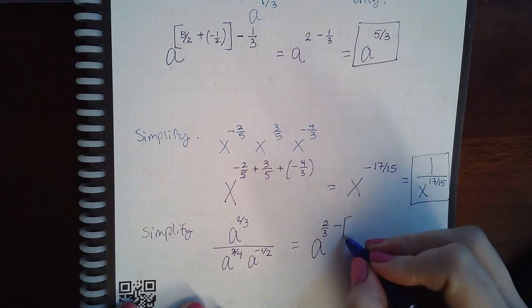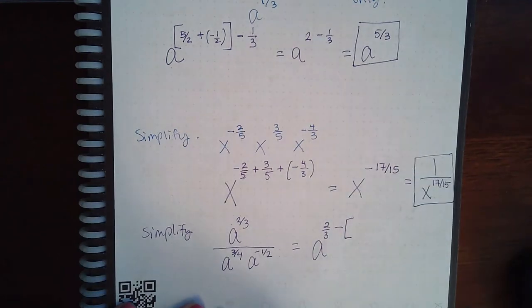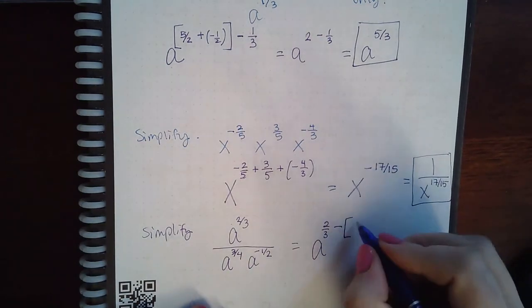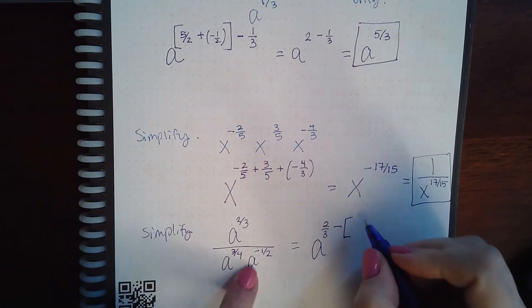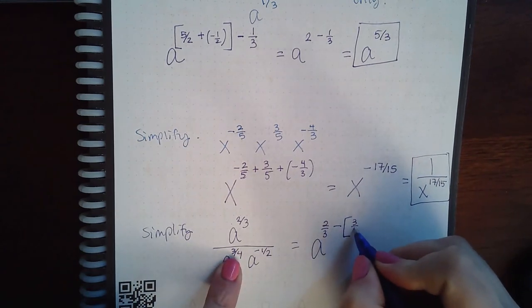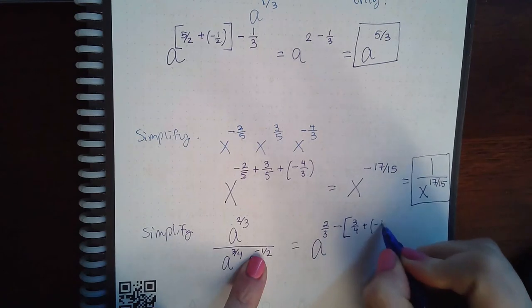And then I would have to take in the bottom, what would I have to do in the bottom? These are multiplied, so I would have to take this exponent and add this exponent.